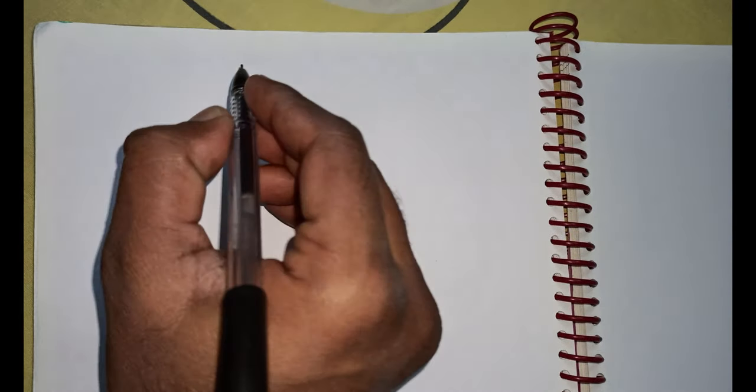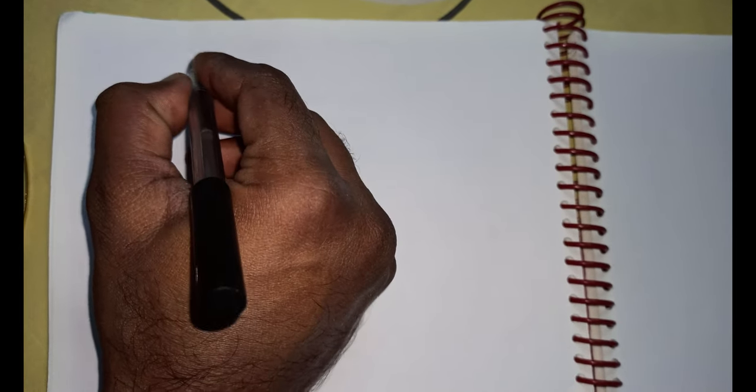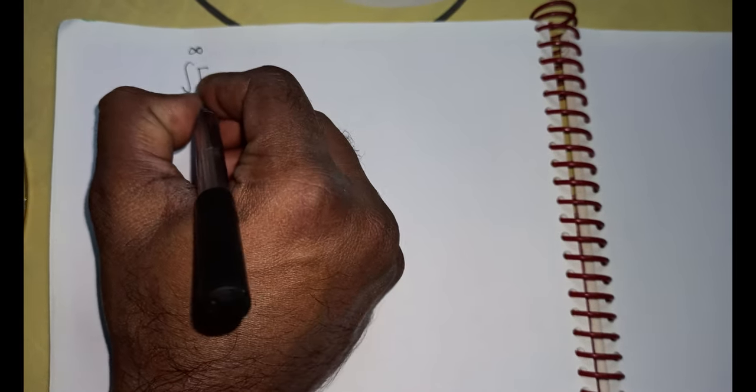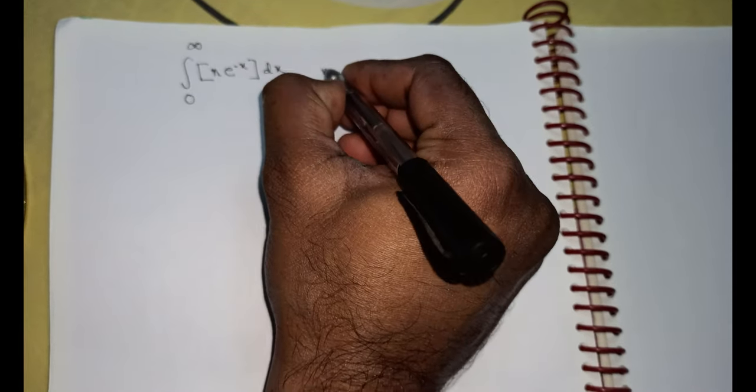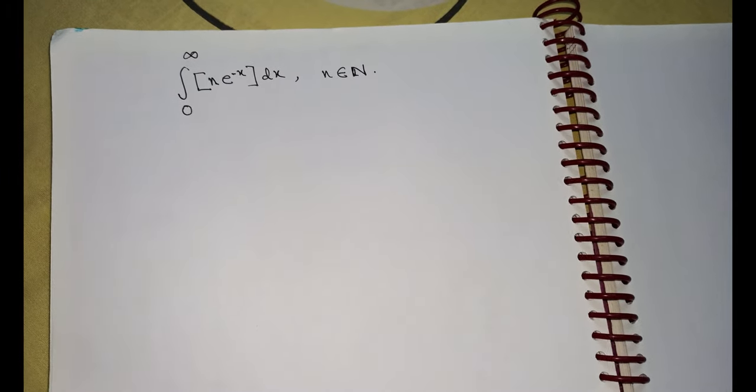Hello friends, today is the second video and third problem-solving lecture in the bring-me integration series. The integration I'm going to solve today is a very tricky and important one. I'm using only pen and paper because of some problems — I hope you guys can understand. The integration is from zero to infinity of the greatest integer function of n times e to the power minus x dx, where n belongs to the set of all natural numbers. This integration is very important because if someone understands how to solve this, they can understand a lot of other problems also.